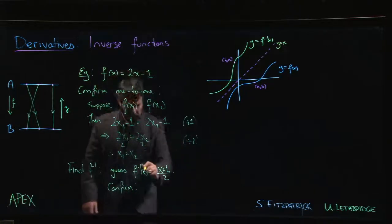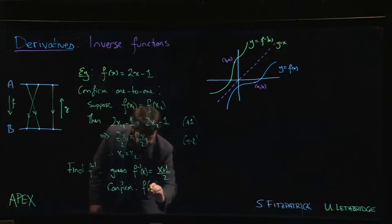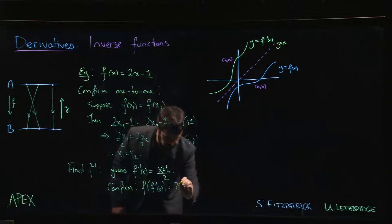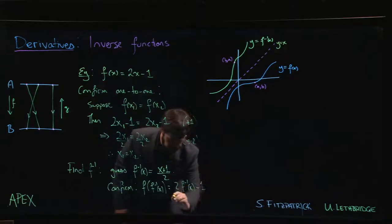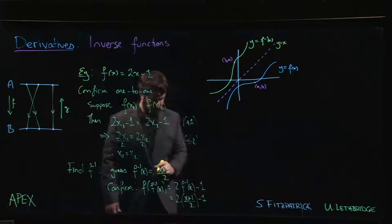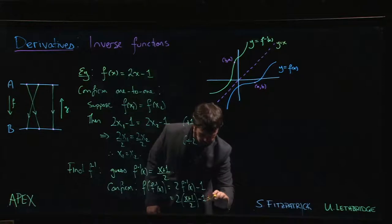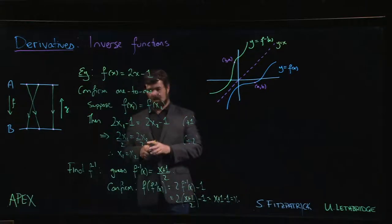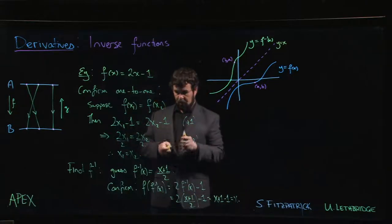How can you confirm? Well, one way you can confirm is relying on these cancellation properties. We can say that f of f inverse of x, okay, so that's going to be 2 times f inverse of x minus 1. So that's 2 times x plus 1 over 2 minus 1. Cancel the 2's, x plus 1 minus 1, and it reduces to x.